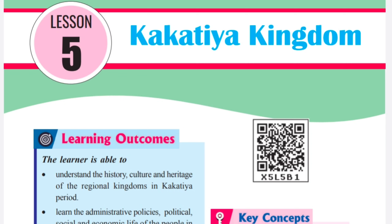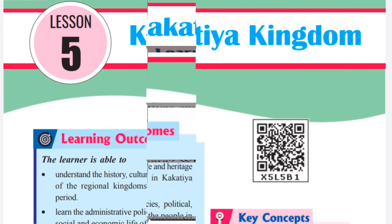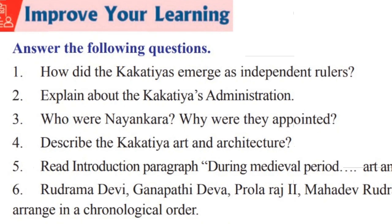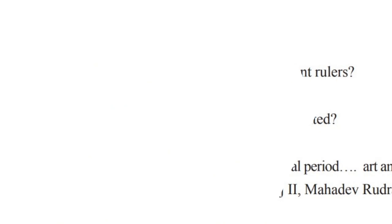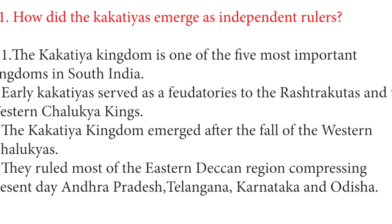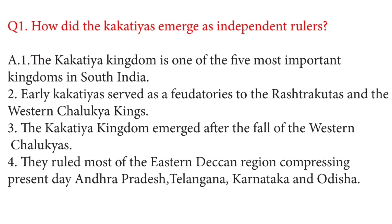Students, let us write question and answers given in 7th class 5th lesson, i.e., Kakathiya Kingdom. Improve your learning. Answer the following questions. First question: How did the Kakathiyas emerge as independent rulers?